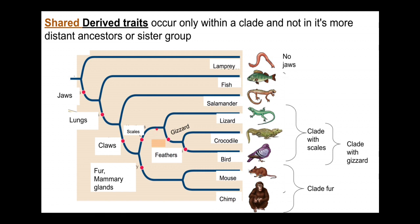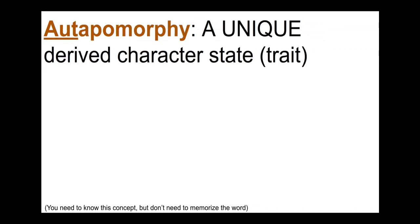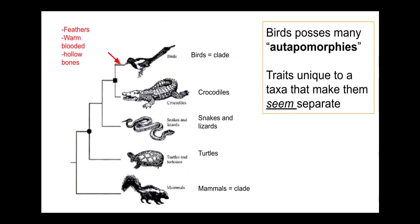Apomorphies and autapomorphies are dependent on exactly what taxa you've chosen to present on a tree. But on this particular tree, there's just one taxon that has feathers, so feathers are an autapomorphy — it's not a shared trait, it's not shared by any of the other taxa here. So an apomorphy is a shared derived characteristic, a shared derived trait; and an autapomorphy is a unique derived trait.